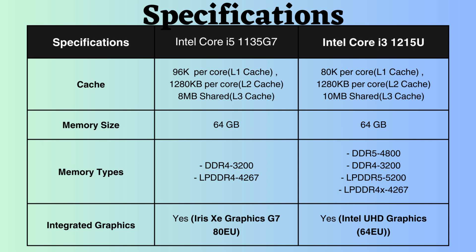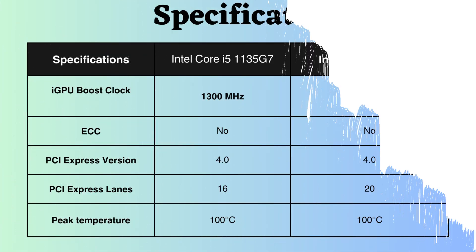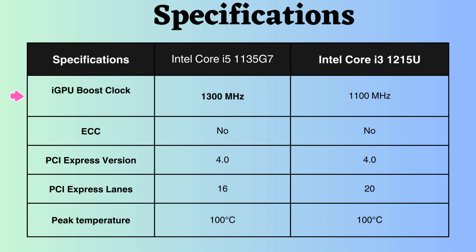Both of these processors have integrated graphics. The graphics frequency of the Intel i5-1135G7 is slightly greater than that of the Intel Core i5-1215U, so for graphical tasks, the Intel i5-1135G7 might work slightly better.